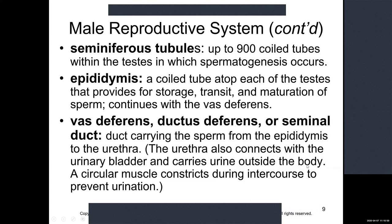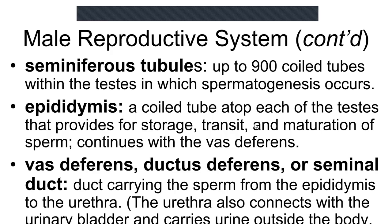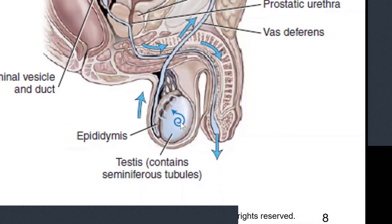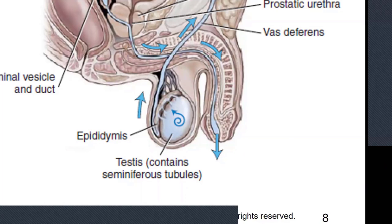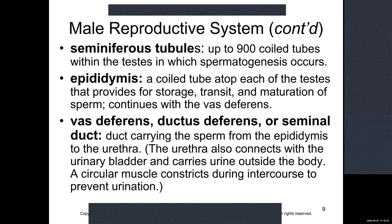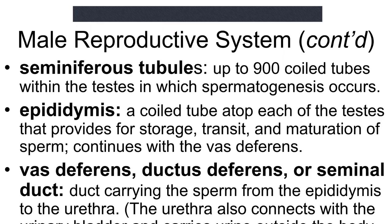The seminiferous tubules are located inside the testicle — they're not visible on the external image. Think of them similarly to the nephron in the kidney: a series of small tubes collecting the production of sperm and funneling it out into the epididymis. The epididymis is then the storage spot before sperm is needed to be pumped up into the vas deferens.